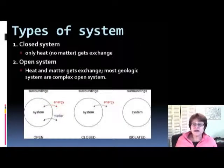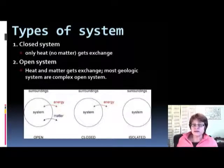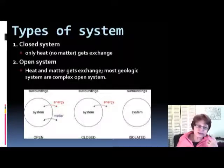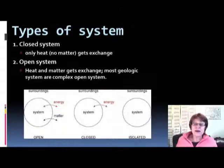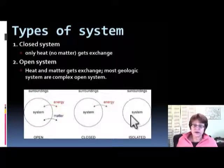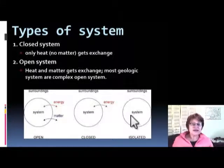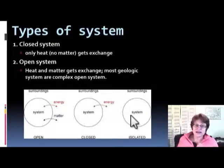What types of systems do we have? First, we have closed systems, which exchange only heat — nothing else. On the other hand, the open system, in chemical and physical terms, will exchange both heat and matter. And there is the isolated system, which doesn't exchange heat nor matter at all. The closed system exchanges only heat energy; the open system exchanges heat and matter; the isolated system exchanges nothing.